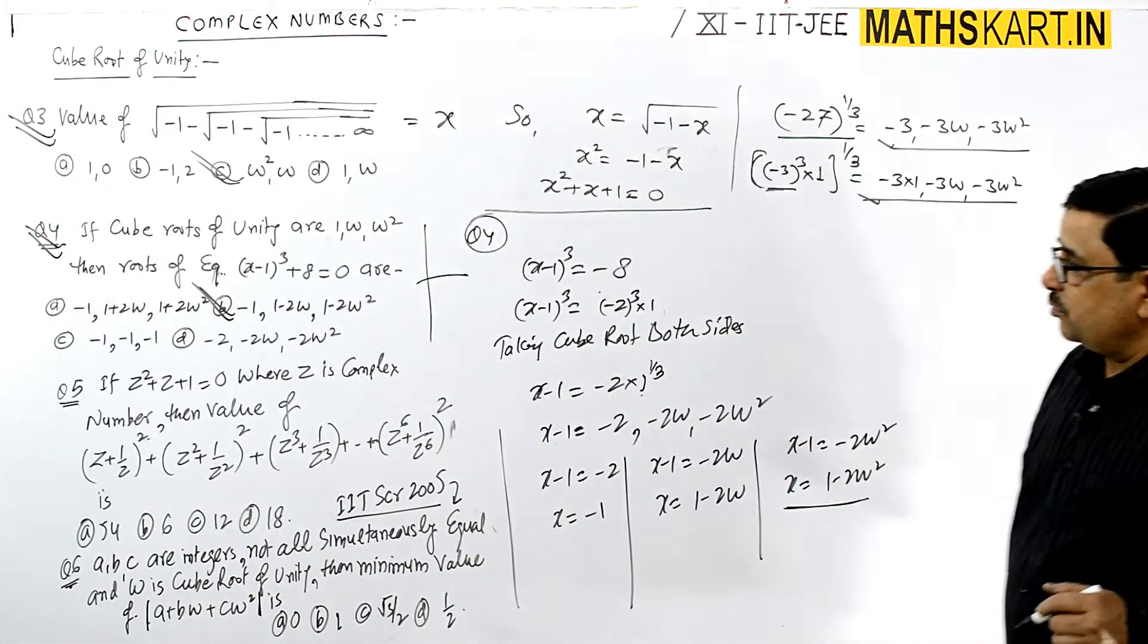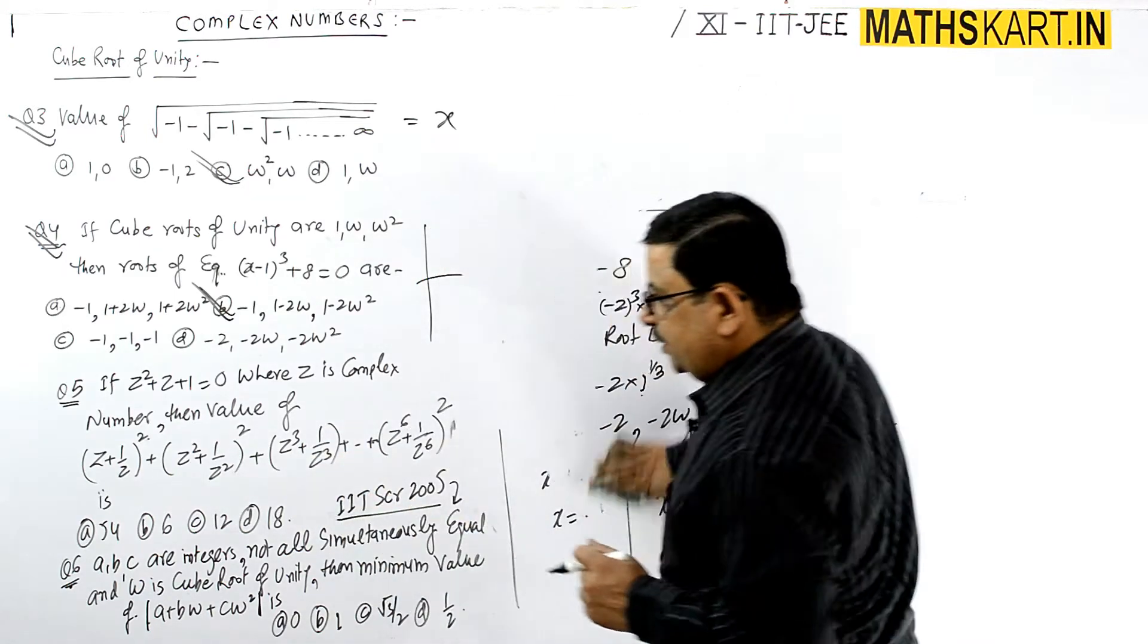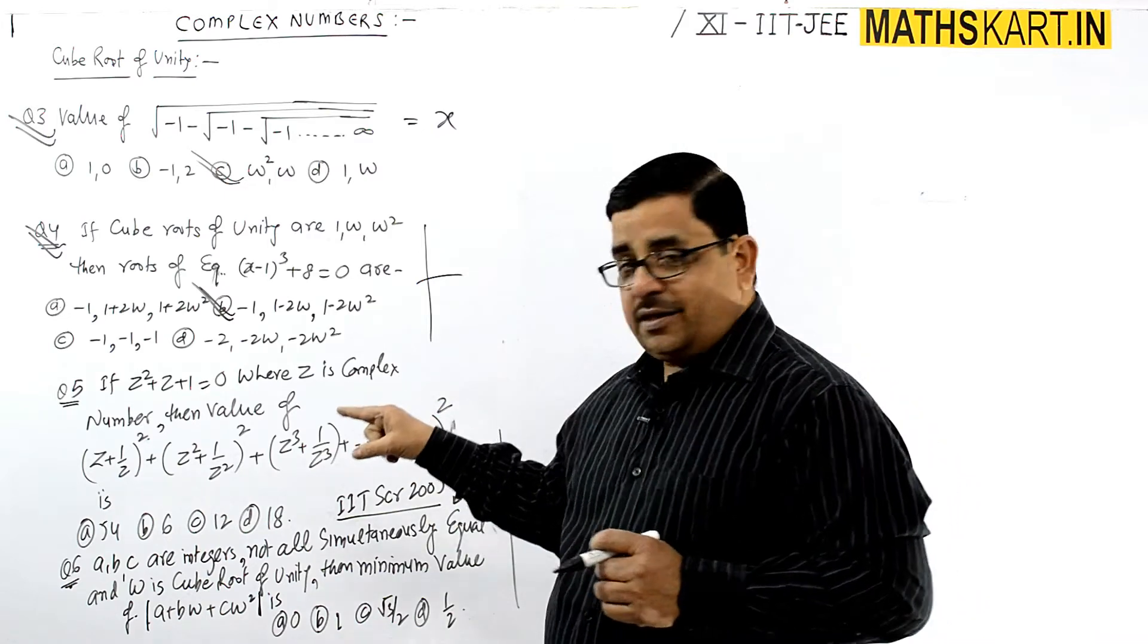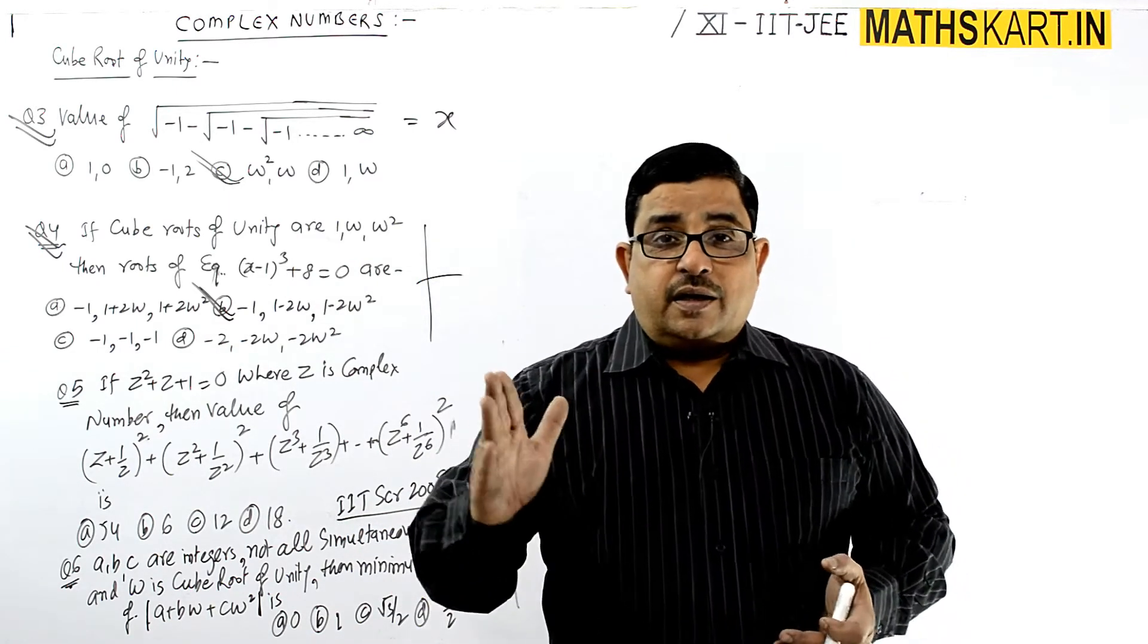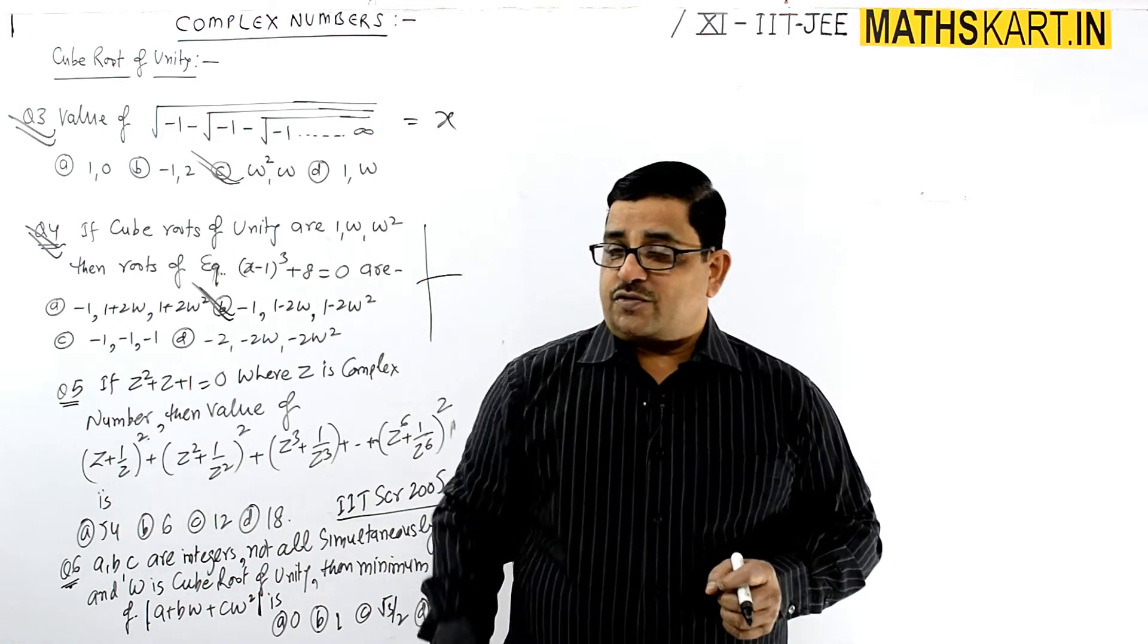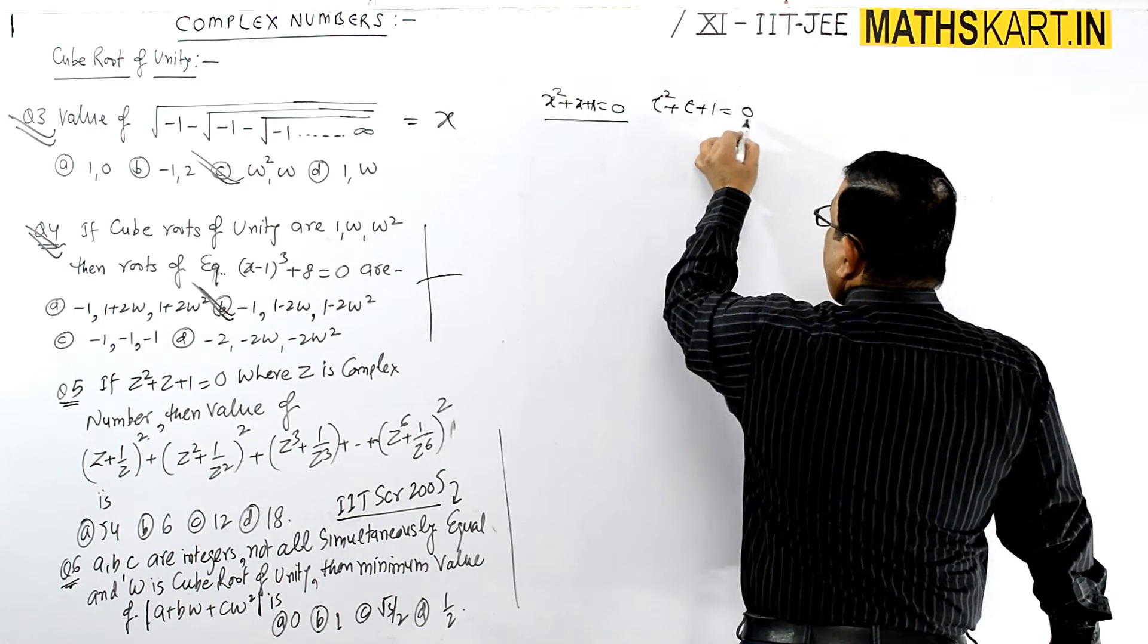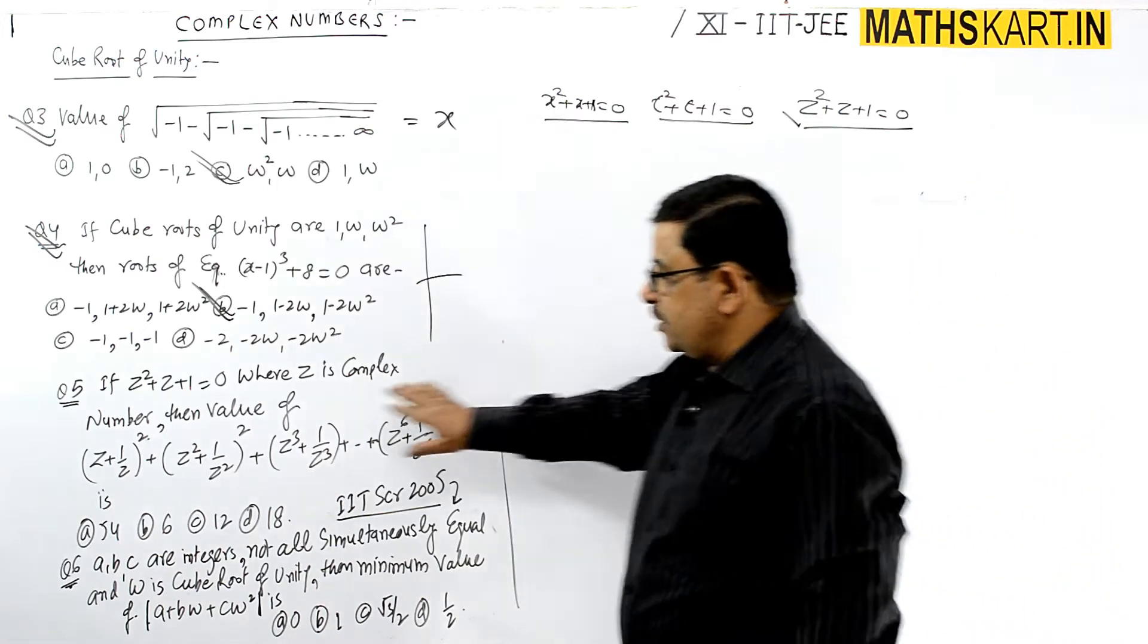Question number 5: if z square plus z plus 1 equals 0 where z is a complex number. We know that this form of equation, whether written in x or z or t, has the same roots: omega and omega square.